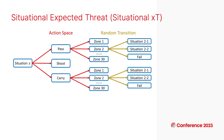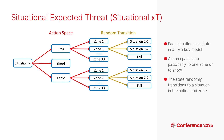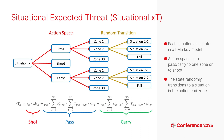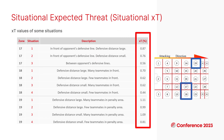With all these discovered situations, we develop situational expected threat. It is a Markov model regarding each discovered situation as a state. The action space for a player is to pass or to carry to one zone, or to shoot. If a player chooses to pass or carry, the model state will randomly transition to one situation in the target zone. We have a mathematical formula for this model, and by solving it we can derive an expected threat for each situation.